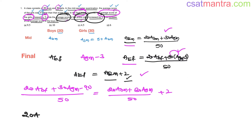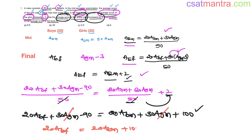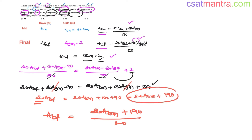Simplifying: 20·ABF + 30·AGM − 90 equals 20·ABM + 30·AGM + 100. The 30·AGM terms cancel on both sides. So 20·ABF equals 20·ABM + 100 + 90, which is 20·ABM + 190. Therefore ABF equals ABM plus 190 divided by 20, which is ABM plus 9.5.